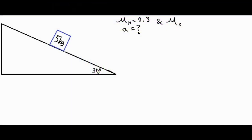In this video we're going to be taking a look at an inclined plane problem where we have a five kilogram mass sitting on a 30 degree incline. First we're going to solve for the acceleration as the object is sliding, and then secondly we're going to solve for the coefficient of static friction in a slightly different case. Let's take a look at the first case where the object is sliding.